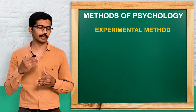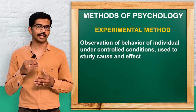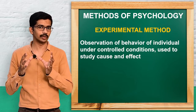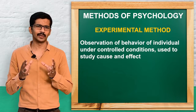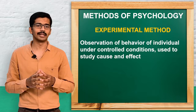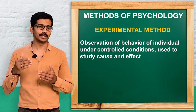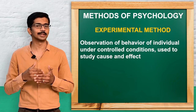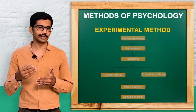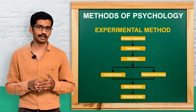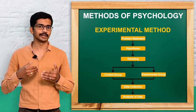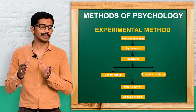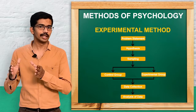The third and important method is the experimental method. In this method, human behavior is studied under a controlled observation or controlled setting, which may be a laboratory or an environment where certain variables are controlled. The experimental method follows certain steps. It starts with a problem statement, after which we identify certain variables and make a relationship between a dependent variable and an independent variable — that is called a hypothesis. The hypothesis is an assumption statement that we want to prove.